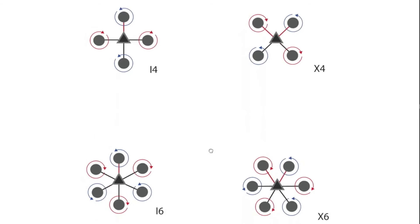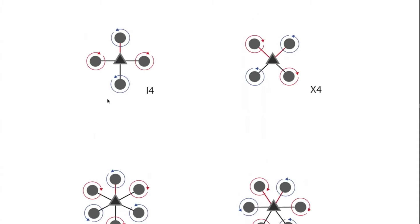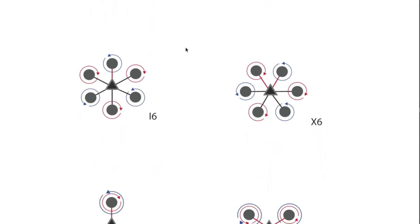If you lose a motor on a quadcopter or you damage a prop, you pretty much have no ability to land safely. If you lose one motor or one prop, that thing's going to tumble out of the air. With a hexcopter, you might lose the ability to rotate the hexcopter or yaw it around, but you should still be able to land safely with six motors.